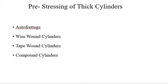In a thick cylinder, the stress distribution is not uniform across the wall thickness. When the thick cylinder is subjected to an internal pressure, the circumferential stress is maximum at the inner surface and minimum at the outer surface. Hence, the design of the cylinder is based on the stress induced at the inner surface, and the stress at the outer surface is much lower.